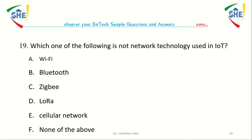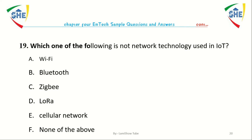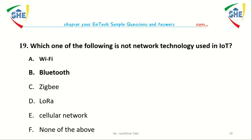Question number nineteen: Which one of the following is not a network technology used in IoT? A. Wi-Fi, B. Bluetooth, C. ZigBee, D. LoRa, E. Cellular network, F. None of the above.